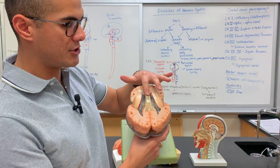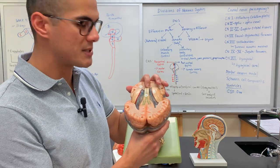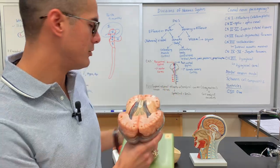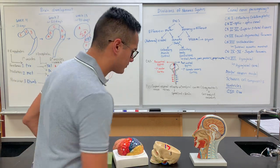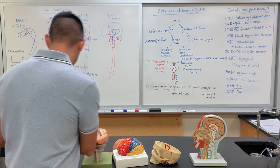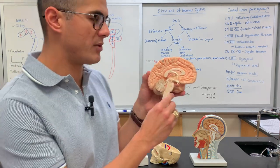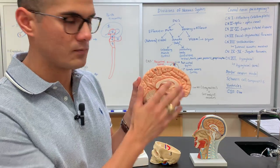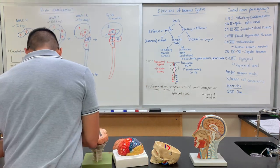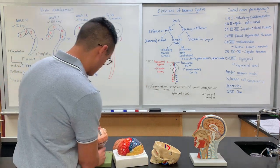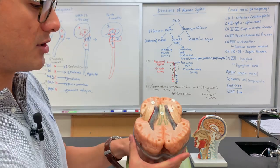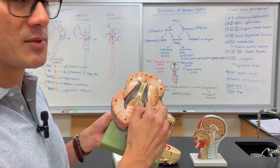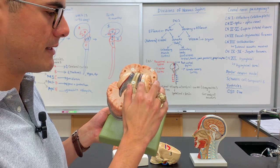This structure is the corpus callosum. The corpus callosum connects the right and left halves of the brain — here shown from a superior view. Looking at the other brain model, you can also see the corpus callosum from a mid-sagittal view. The part here on the side is known as the internal capsule, where a bunch of tracts are found.